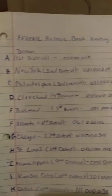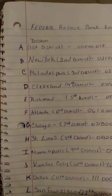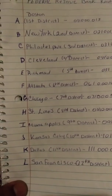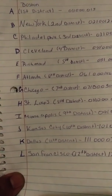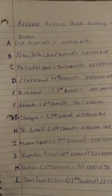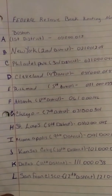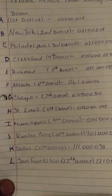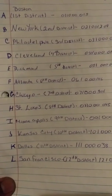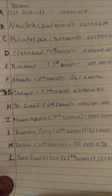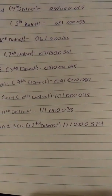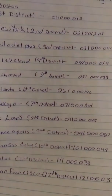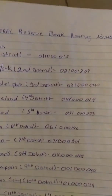That little letter on the back of your Social Security card, it's going to link up to one of those banks, A through L — Boston, New York, Philadelphia, Cleveland, Richmond, Atlanta, Chicago, St. Louis, Minneapolis, Kansas, Dallas, and San Francisco — all districts, basically.